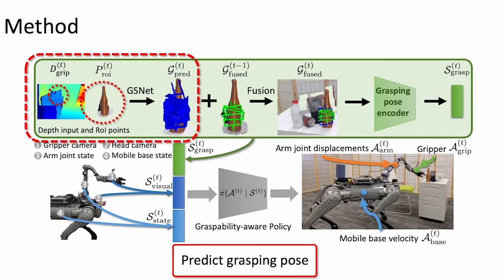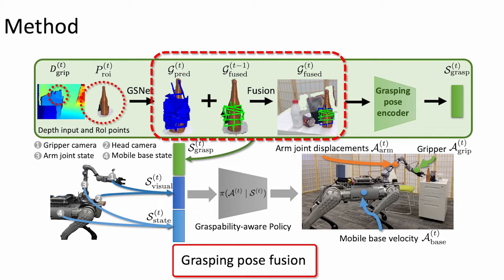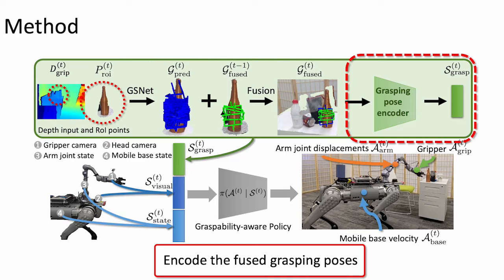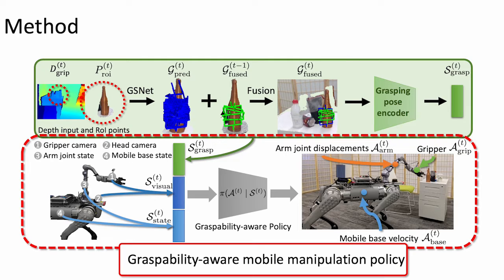Here's an overview of our framework. First, our method processes the gripper depth map to extract a region of interest point cloud. This is then used by GSNet for predicting grasping poses. These predicted grasping poses are integrated into the so-far fused grasping poses, which are further encoded for graspability state. We then input the graspability state, combined with visual and mobile base and arm state, to learn our graspability aware policy.